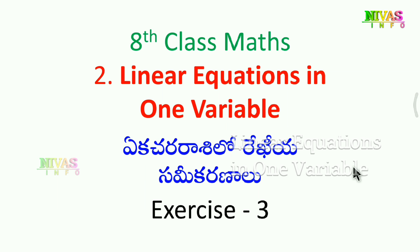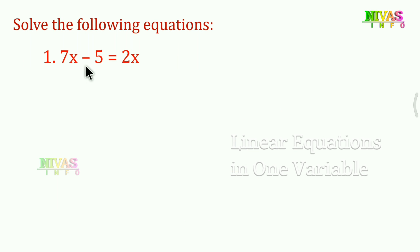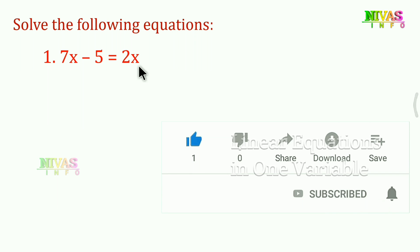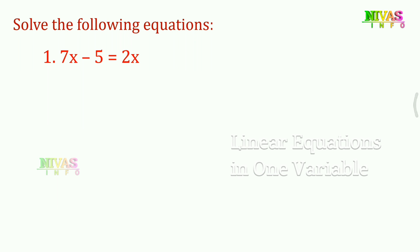Hello everybody, welcome to Universe Info. Today's topic is 8th class, Chapter 2, Linear Equations in One Variable, Exercise 3. The first question is 7x minus 5 is equal to 2x. Here x is on both sides — only one variable. This is a linear equation in one variable. When variables are on two sides, we bring them to one side using the transpose method.